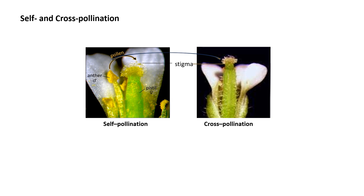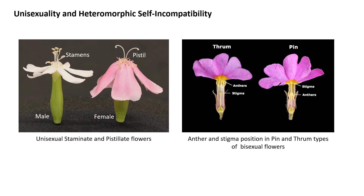Let us see how self-incompatibility is expressed in plants. Before we come to self-incompatibility, let us see another method by which plants avoid self-pollination. Unisexual plants bear male and female reproductive organs in different flowers on the same plant or on different individuals. The male plants are called the staminate flowers and the female flowers are called the pistillate flowers. Many unisexual plant species show rudiments of opposite sex structures in their flowers, which suggests a recent evolution of unisexual flowers. However, successful reproduction in unisexual plants requires close proximity of plants of both sexes, which may not always be possible.